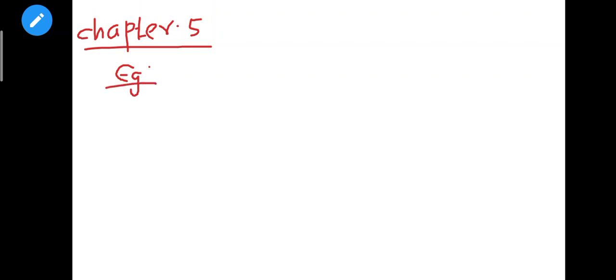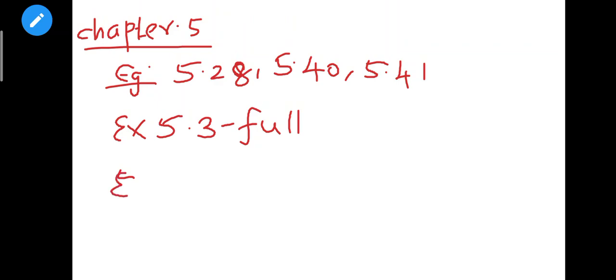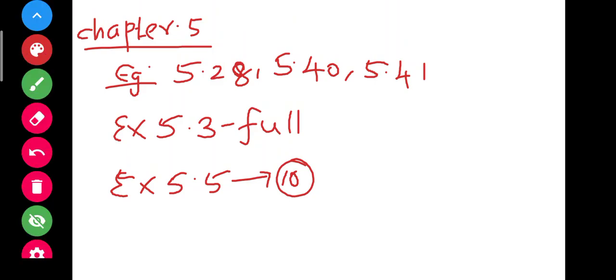So next, fifth chapter — that is Two Dimensional Analytical Geometry. So chapter 5 — in the examples: example 5.28, next 5.40, 5.41. In the examples, reduce 2.8 — so 5.28, 5.40, 5.41 examples reduced. Next exercise sum 5.3 — exercise 5.3 full reduce. Next exercise 5.5 — 10th sum, exercise 5.5 tenth sum delete portion. This is about the fifth chapter.